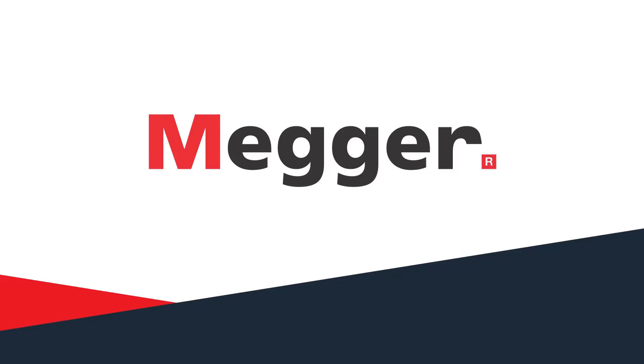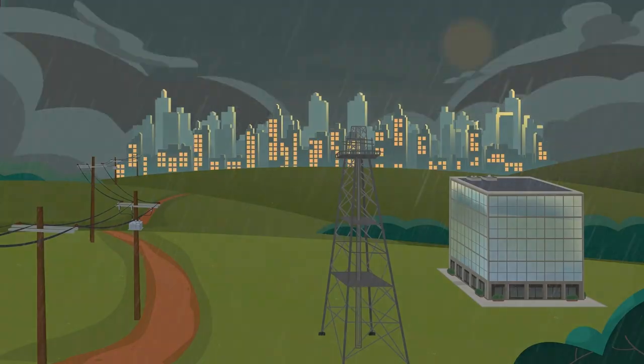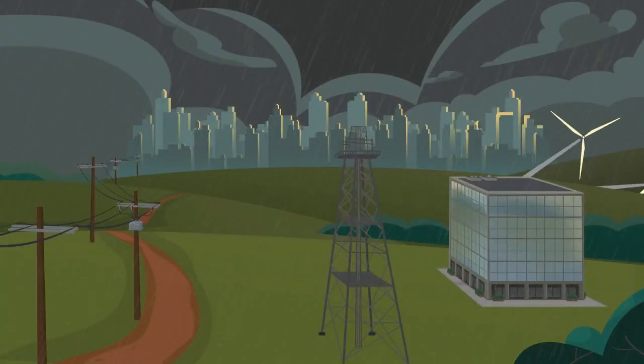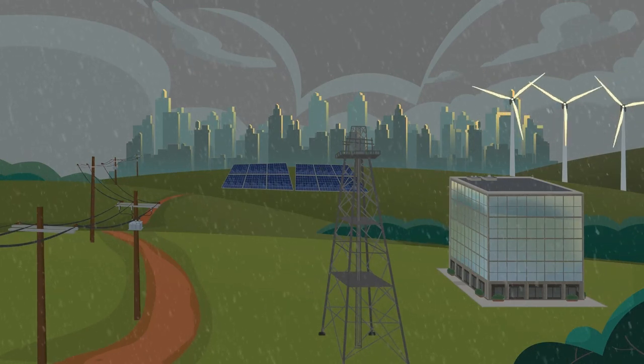Today's distribution networks are often the weak link in the supply of reliable power. Aging networks, extreme weather events, renewable energy sources, and new demands on energy consumption can impact their performance.